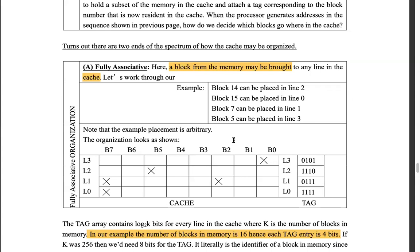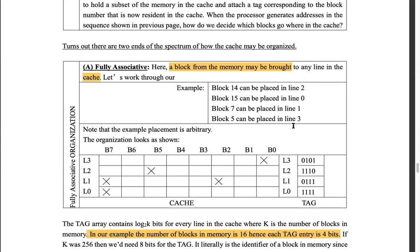If I'm looking for block 14 (1110 in binary), it checks the first tag — no match. Checks the second tag — it matches, so it's a cache hit. For block 7, the third tag matches. Suppose I say block 10 — it goes through all four tags and there is no matching entry. This is a cache miss — a read miss if you want to read data, or a write miss if your purpose was to write data to the cache.